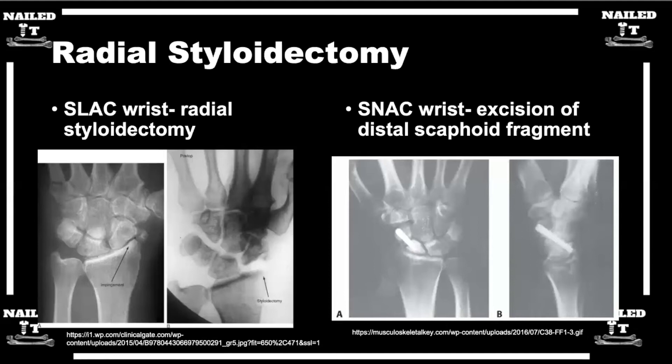This treatment algorithm — radial styloidectomy and distal pole excision — is mostly for stage one patients where pathology is between the radial styloid and scaphoid. Are there other treatment options to consider in stage one SLAC or SNAC injuries before moving on to stage two?